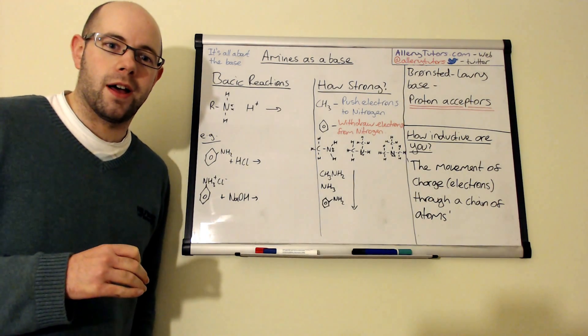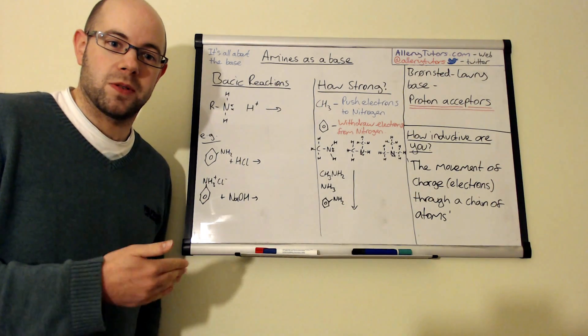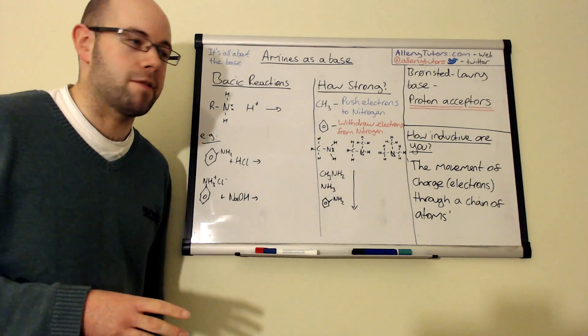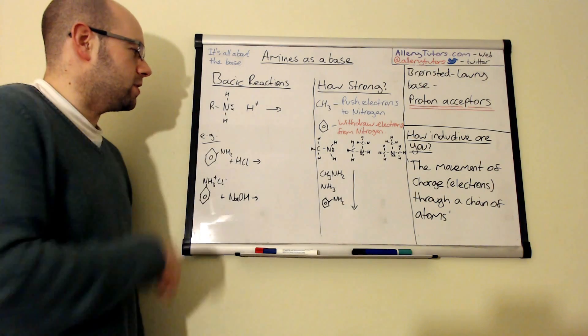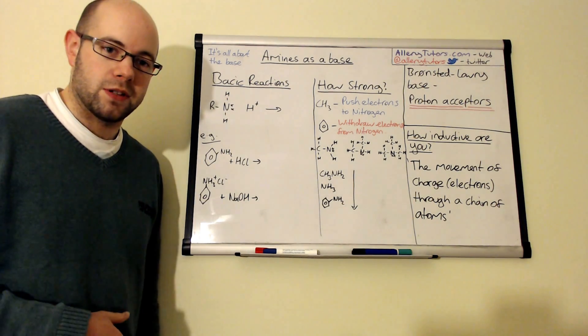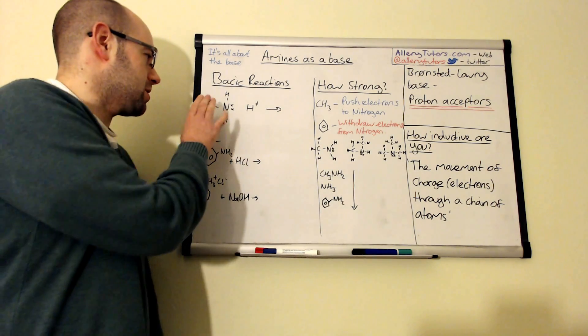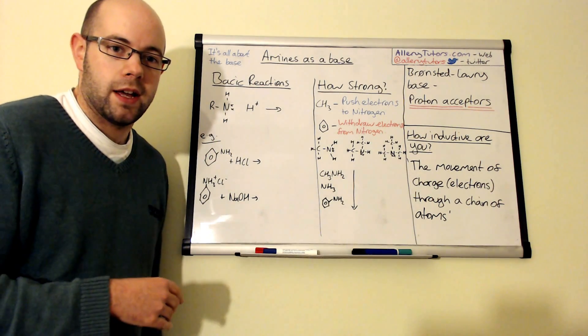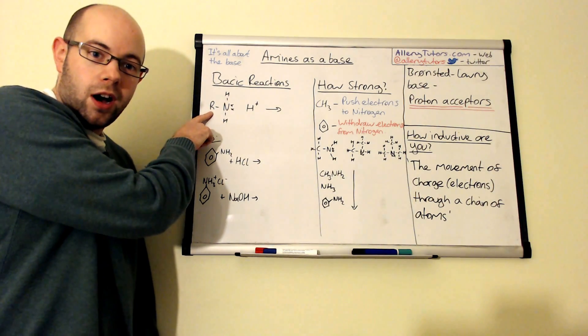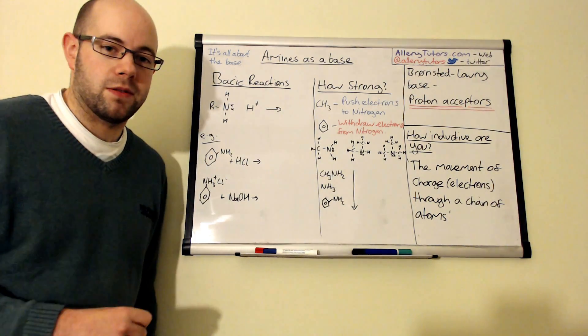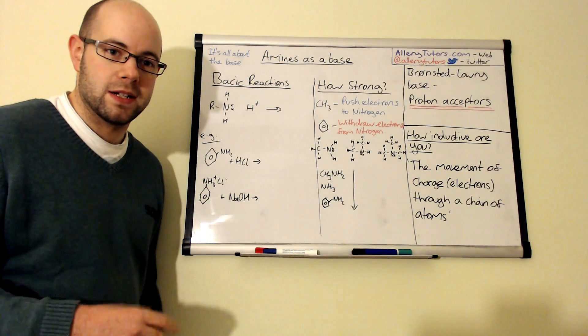So we're going to start with the basic theory. Obviously these things have a base and a Bronsted-Lowry base is basically something that accepts a proton. So I've got a little reaction here just to show you how these things work. Now amines are an NH2 group and they're normally attached to an alkyl chain, so we represent this as R, or you can react it with an aromatic chain or an aromatic molecule such as benzene as well.